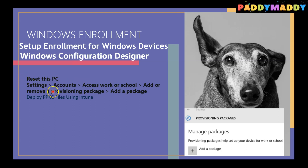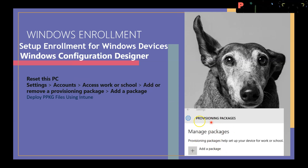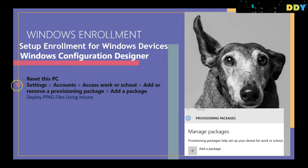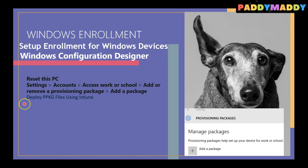Option two: go to Settings > Accounts > Access Work or School Account, where you have a Provisioning Packages option. You can add the package here after the machine is ready - the user just needs provisioning configuration settings applied automatically from the package you already created. Option three: you can also deploy PPKG packages from Microsoft Intune directly as a provisioning package.